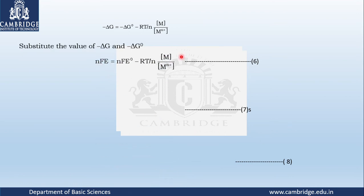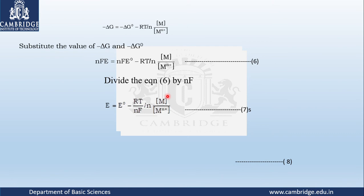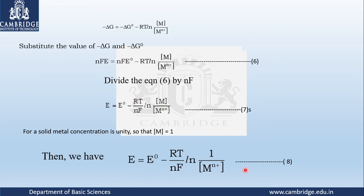Simplifying further and dividing the equation by n F gives: E equals E-naught minus RT divided by n F times log of M over M-n-plus. Since M (the solid metal) equals 1, substituting that gives the Nernst equation for the single electrode. Note that there is a log term and a minus sign. If you want to change the minus sign to a plus sign, the concentration term can be taken to the numerator. By substituting values for R, F and T, it takes the form with the constant 0.0591.